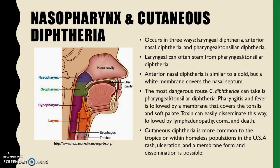Anterior nasal diphtheria is very similar to a cold. Bloody nasal discharge and a white membrane covering the nasal septum usually occur. However, it is difficult for the toxin to disseminate from here, so quick treatment with antitoxin and antibiotics is effective.